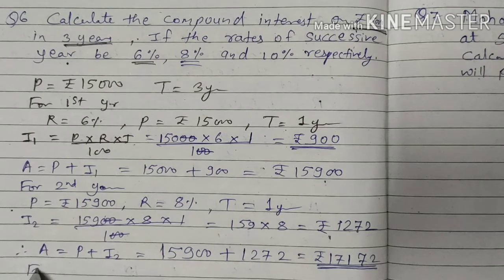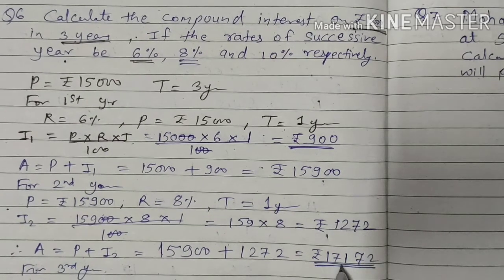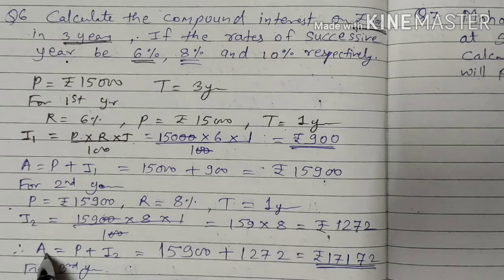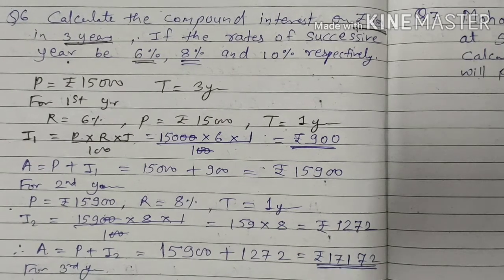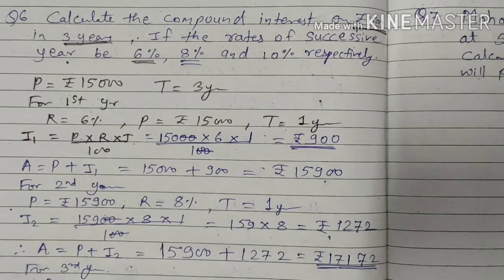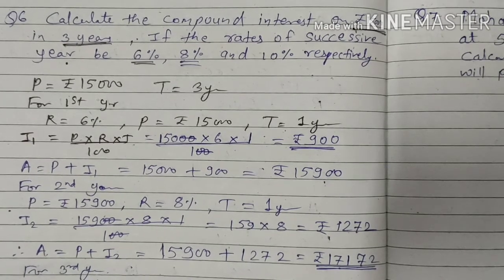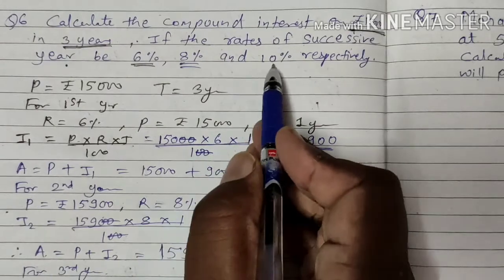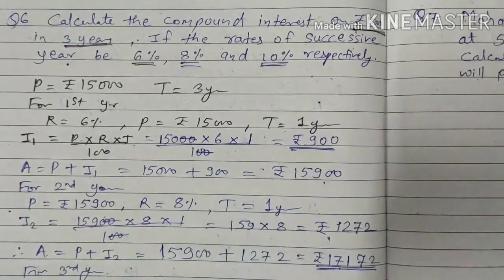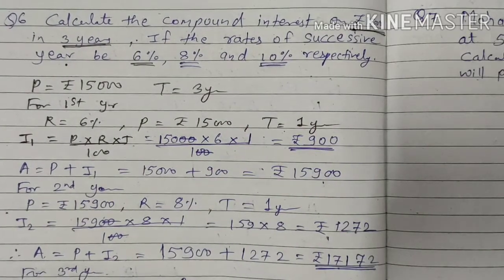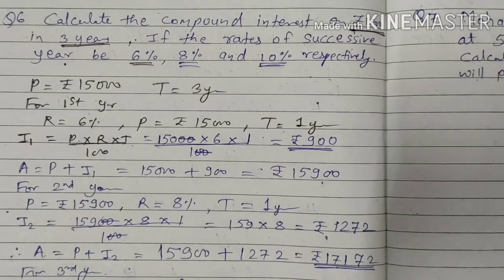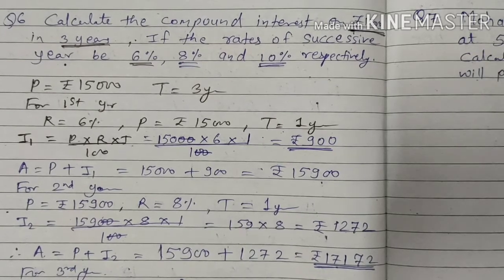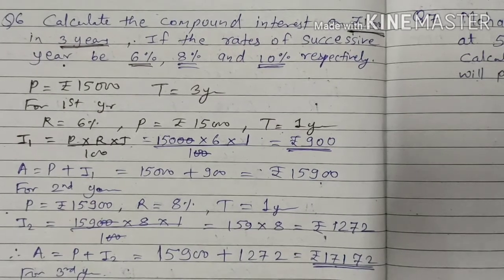Now make a calculation for the third year. The amount of the second year will become the principal for the third year. So the principal we will take as Rs. 17,172. The rate of interest for the third year is 10% and the time is 1 year.